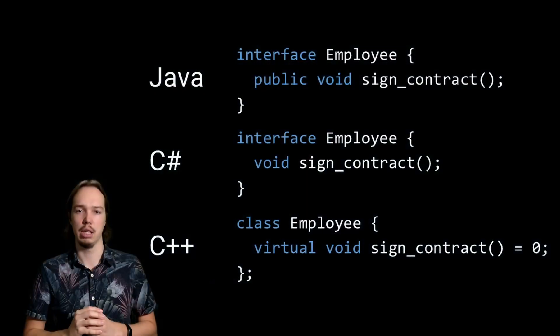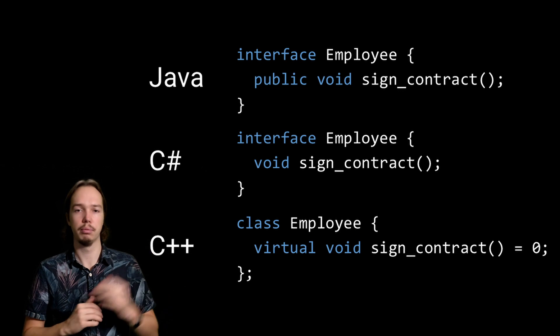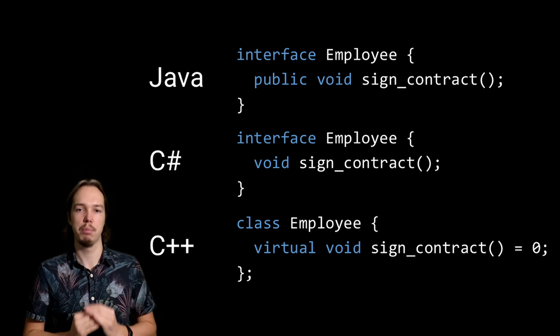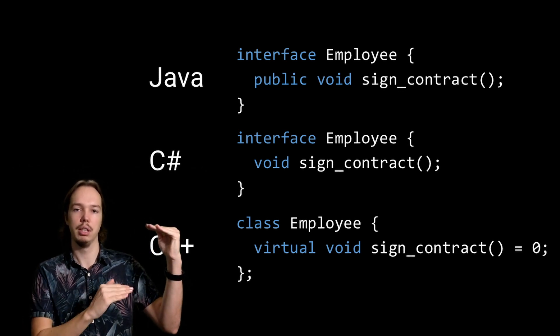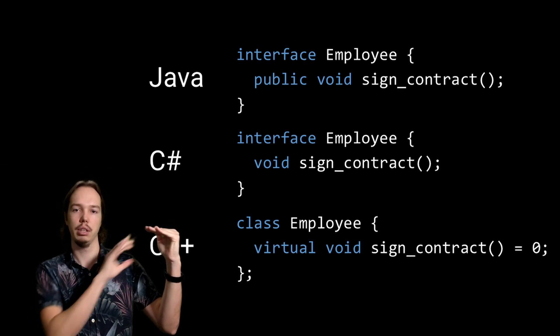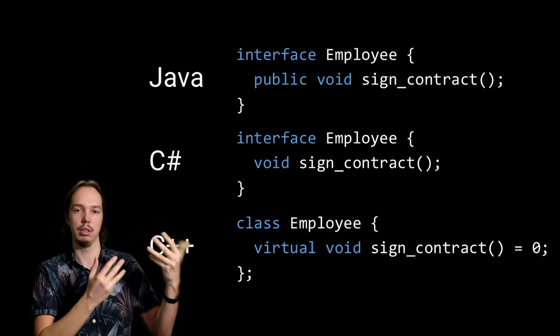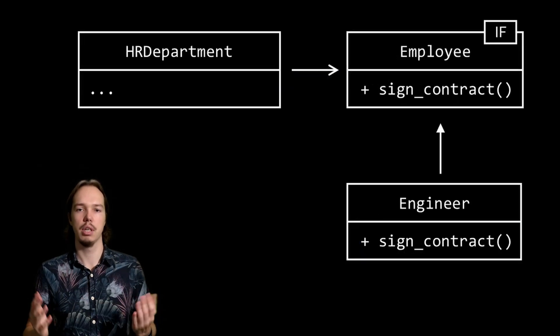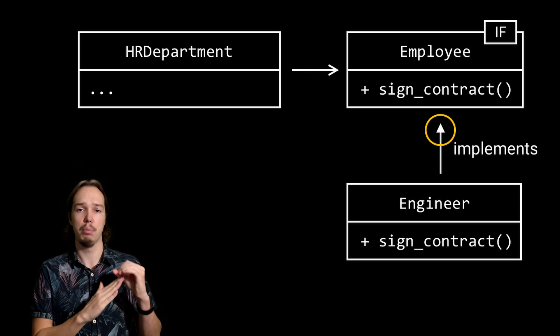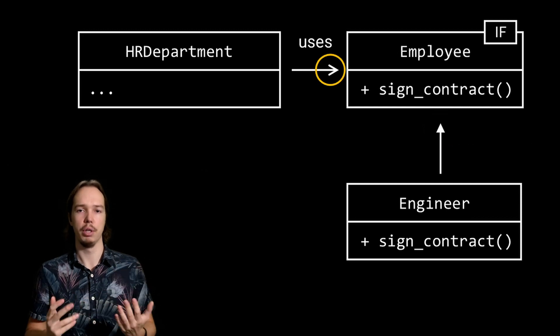Before we look at the open-close principle at a higher system level, I first want to make a remark about interfaces in different languages. Interfaces are explicitly supported in all the big object-oriented languages that are statically typed — examples include Java, C#, C++. In these languages, we explicitly define the interface and the concrete class, and this concrete class then inherits from the interface. I use the closed arrowhead to indicate an implements relationship, and the open arrowhead for a normal using relationship.